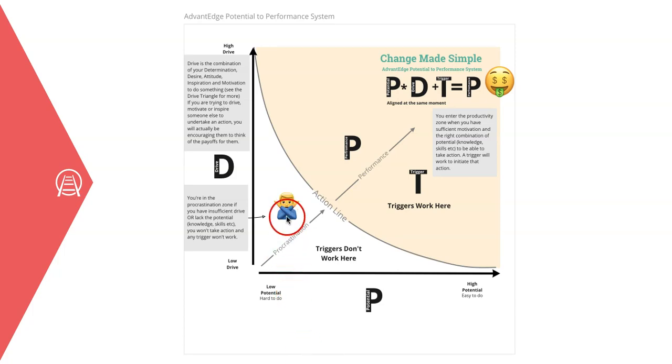And there's a relationship between drive and potential. And this curved line is called the action line. If someone is anywhere above the action line when triggered, they will perform the action. They are in the productive zone.